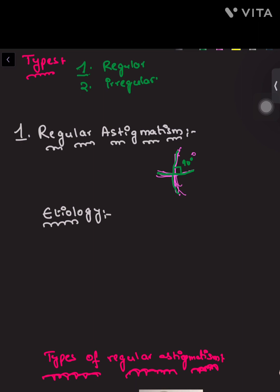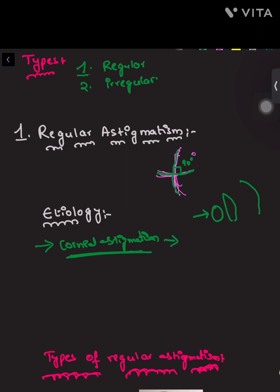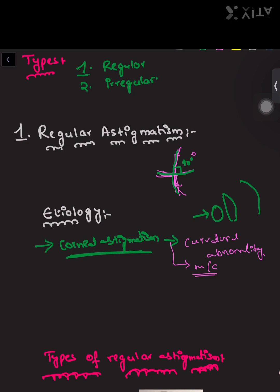To understand the etiology of regular astigmatism, first we understand how the rays will pass: light rays pass through the cornea, then the lens, and into the retina. Due to corneal involvement, we call it corneal astigmatism, which is the most common cause for regular astigmatism.